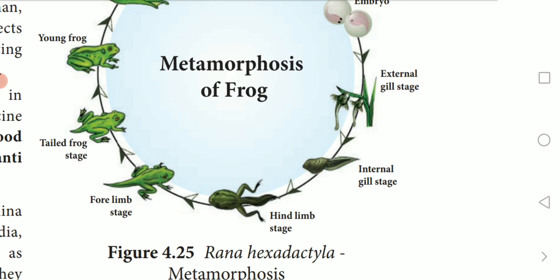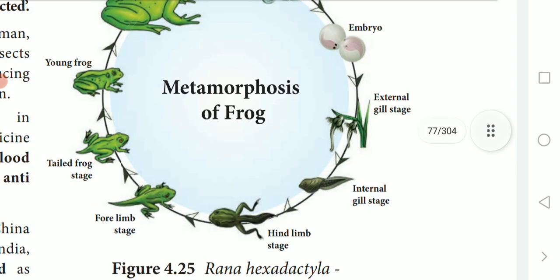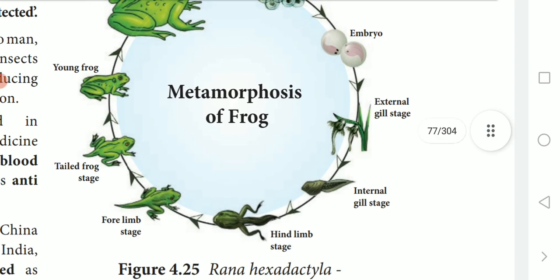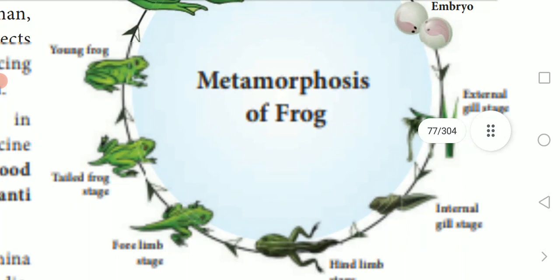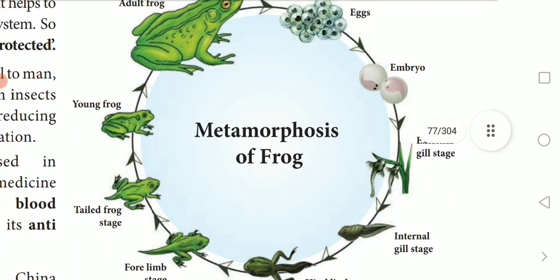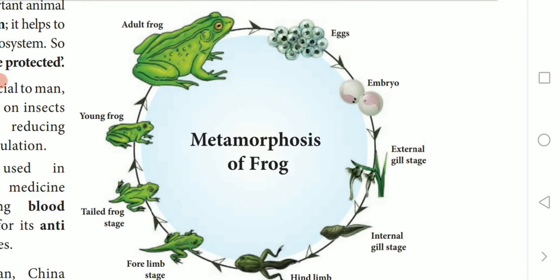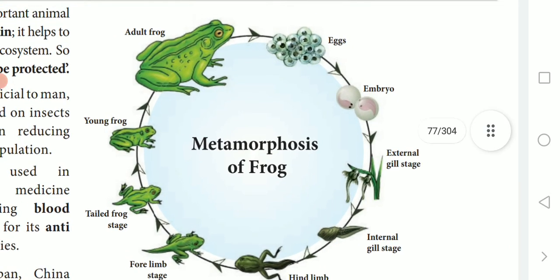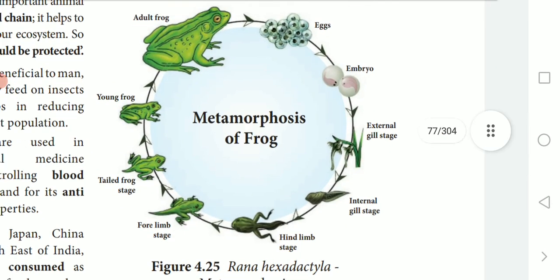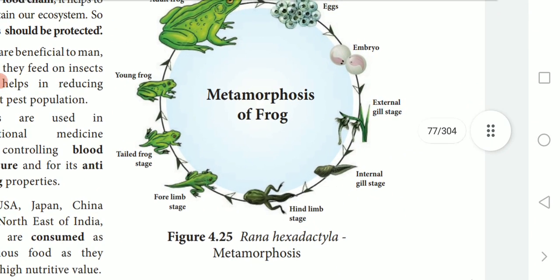Legs grow from the body, and the tail and gills disappear. The mouth broadens, developing teeth and jaws, and the lungs become functional. The picture you are seeing is the metamorphosis of frog — you have to draw this diagram in your classwork.